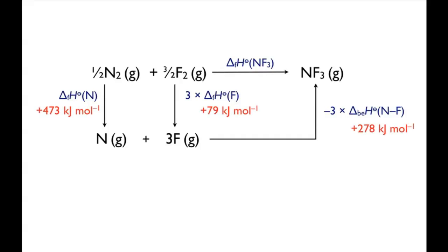These are the bond dissociation enthalpy values. This is the expression for the enthalpy of formation. Remember, you're breaking nitrogen, nitrogen, fluorine, fluorine bonds, so these steps are positive, whereas you're forming NF bonds, so this step is negative. Don't forget you're forming three fluorine atoms and forming three NF bonds.